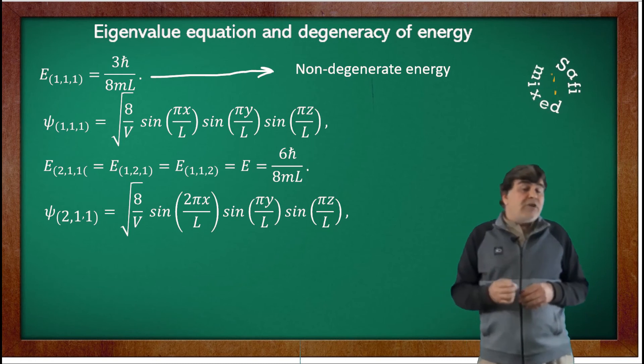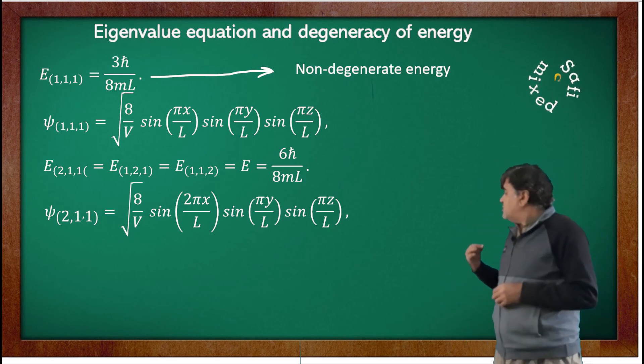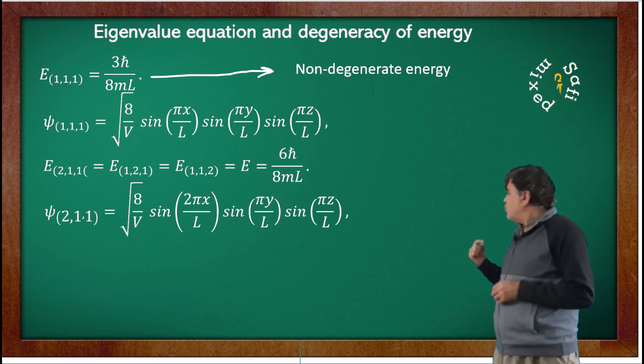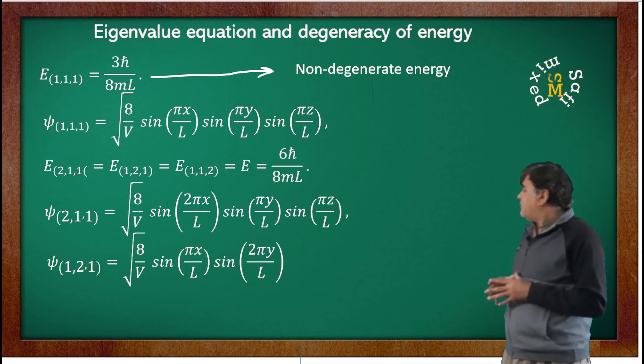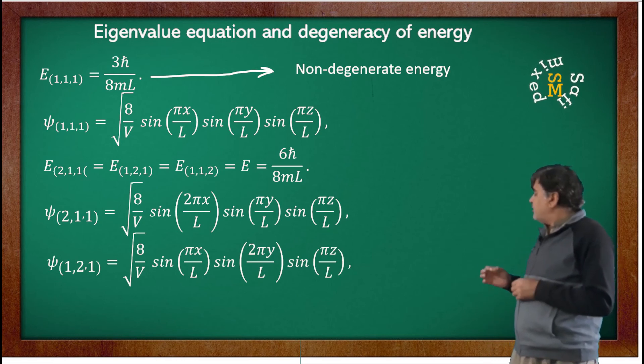And for the other set of values, E_{1,2,1}, we can write the wave function ψ_{1,2,1} in this way, where we multiply the 2 with only the y part of the sine function.